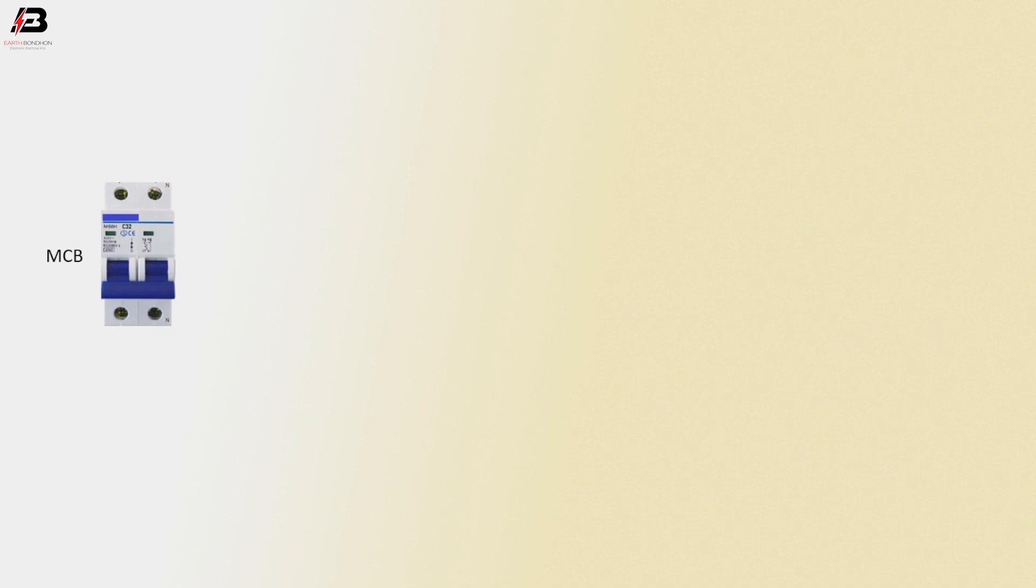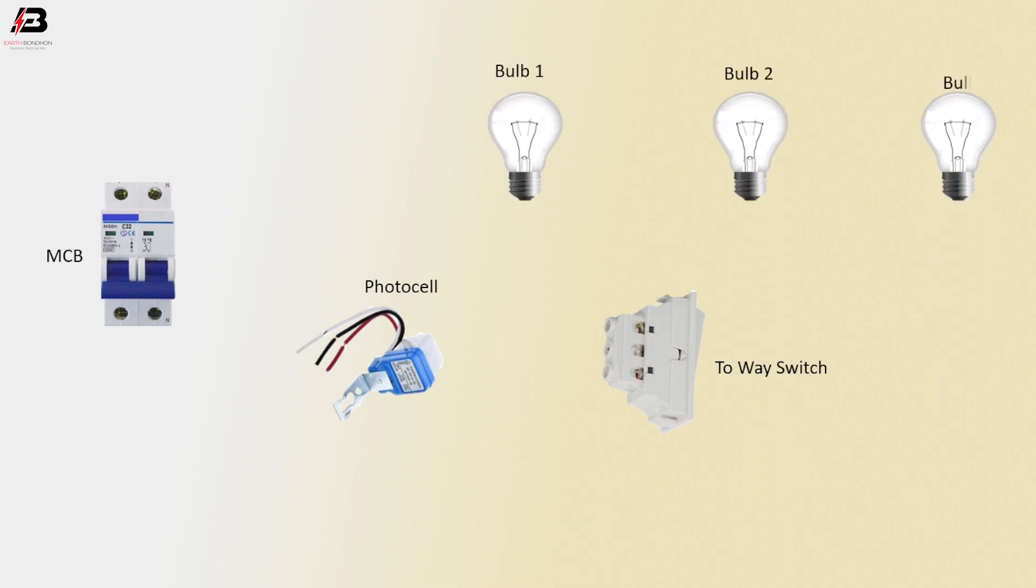Double pole MCB circuit breaker, photocell sensor, 2-way switch, bulb 1, bulb 2, and bulb 3.